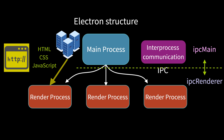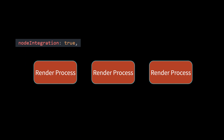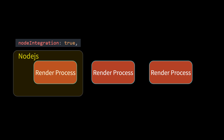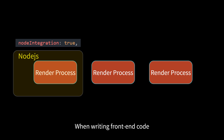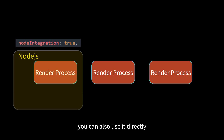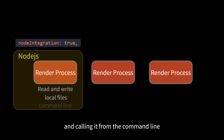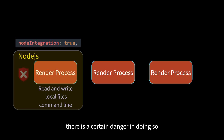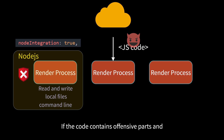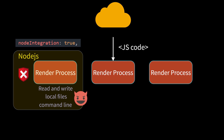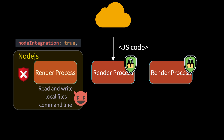Both sides can communicate any serializable information. There is also a more convenient way: adding the node integration parameter when creating the render process, which provides it with the Node.js environment. In this way, it breaks through the limitations of the browser, and when writing front-end code you can also directly read and write local files or call from the command line. However, there is a certain danger in doing so, because some front-end JS code is downloaded from the internet. If the code contains malicious paths and intentionally calls local files and system interfaces, there will be security risks, since the JS execution environment in the browser is normally in a very secure sandbox environment.